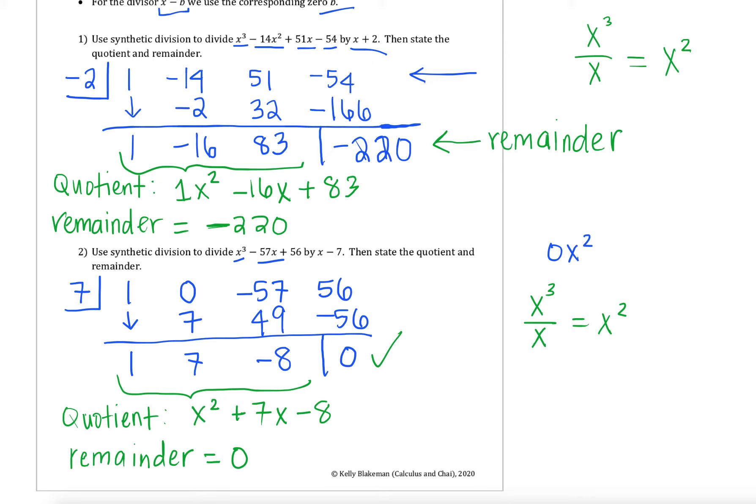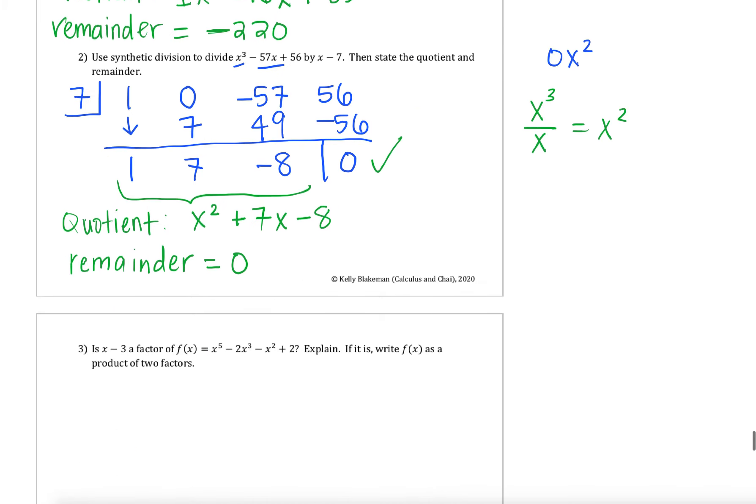There's a big difference between these two examples because of what the remainder ended up being. In our first example, we got a remainder that was not equal to zero, and what that means according to the division algorithm is that x plus 2 is not a factor of this polynomial. Versus in example two, since our remainder was equal to zero, that tells us that x minus 6 is a factor of this original polynomial that we started with. And we're going to use that concept in our next couple of examples.